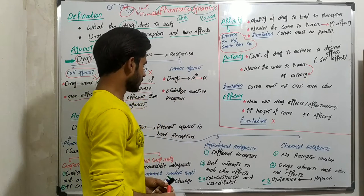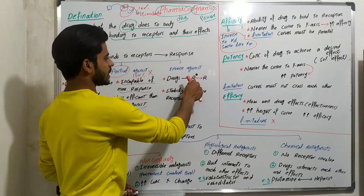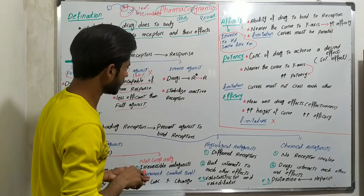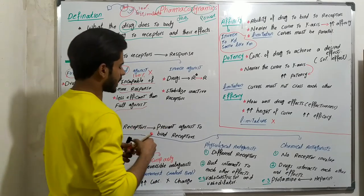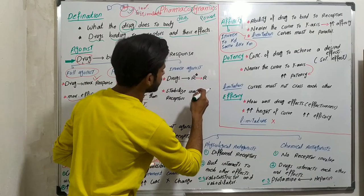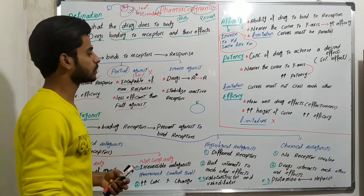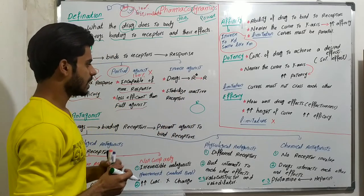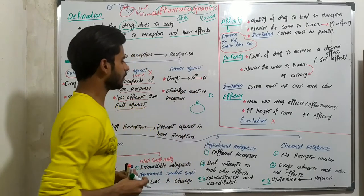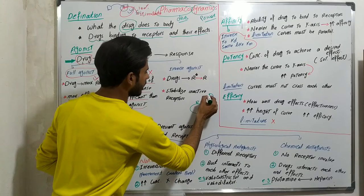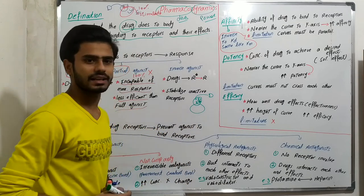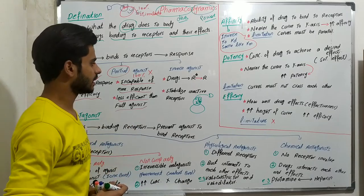The next term is inverse agonist. Inverse agonist drugs change the active receptors into inactive receptors or stabilize the inactive receptors. Normally, a receptor is inactive when no drug is bound. When a drug comes and binds, the receptor becomes active and shows its effects. This is the normal process.